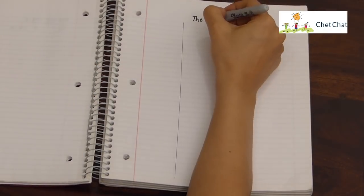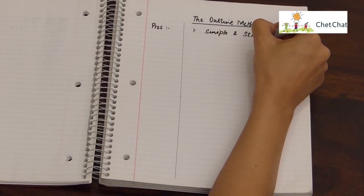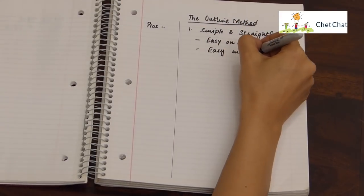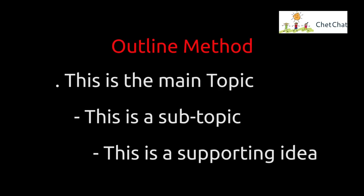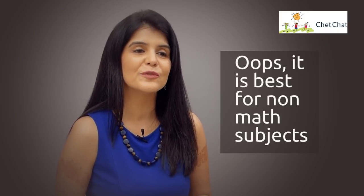Step number one: taking notes in the classroom. Usually in the classroom, it's easy to take notes using the outline method. The pros are that it's simple and straightforward, and therefore it can be done on a computer and is easy to do in class. It also allows you to add points later if you leave empty spaces between sections. However, it cannot be used for non-mathematical subjects and is not very effective if your teacher doesn't teach in a structured and systematic manner.